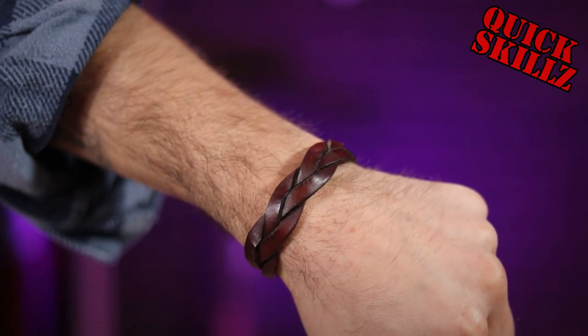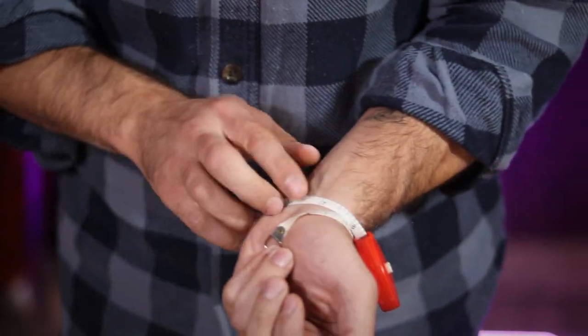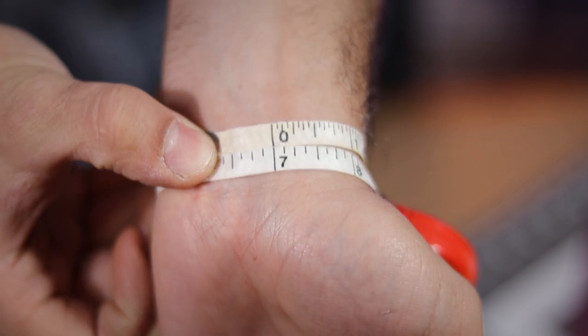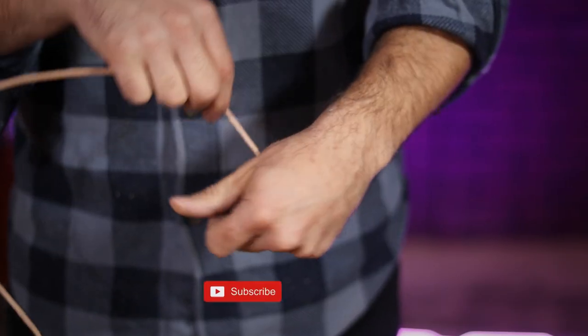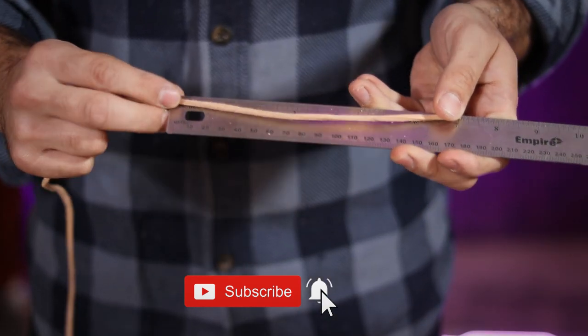Now since we're making a bracelet, the first thing we need to do is measure our wrist. As you can see, my wrist is an even seven inches around. And if you don't have this flexible tailor's tape, you can always just use some cordage or rope and measure it against a ruler.